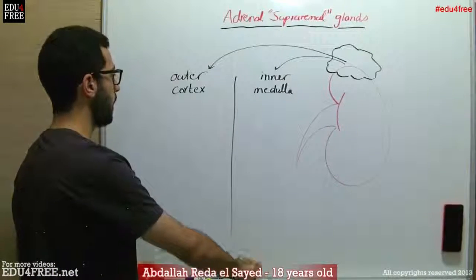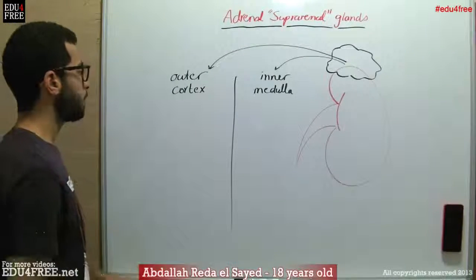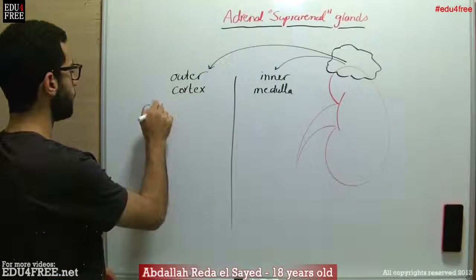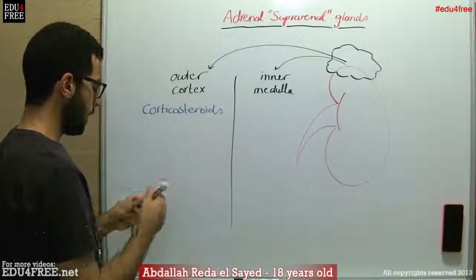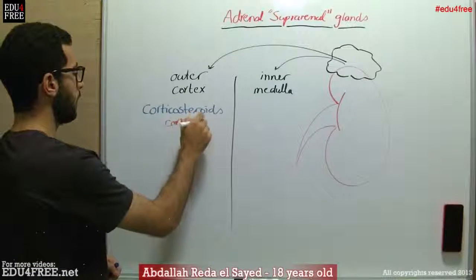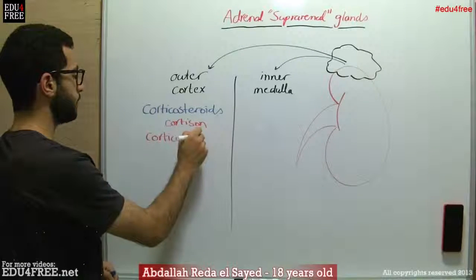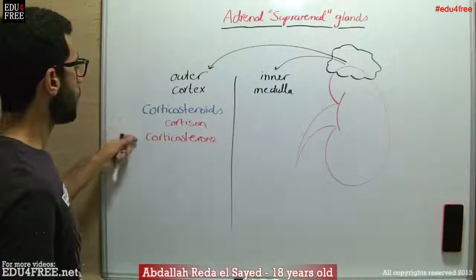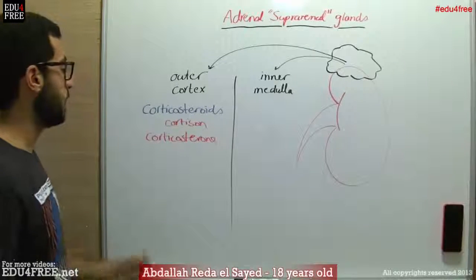We begin with the outer cortex. The outer cortex secretes three main types of hormones. First of all, we have corticosteroids — for example, cortisone and corticosterone. These hormones work on maintaining the glucose or carbohydrate metabolism in the human body.